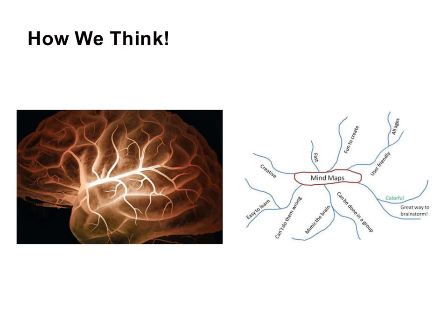How we think. On the left you see a picture of a brain with all its connections and synapses. On the right you see a mind map. The thing that is most striking about this is that the mind map is constructed in a format that mimics how our brain connects thoughts and images. We don't think in a one-dimensional linear manner — we think in connected thoughts. Mind maps are visually drawn and depict connected thoughts. This is just how we think.